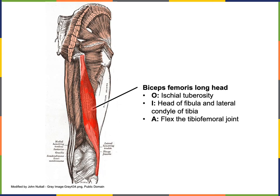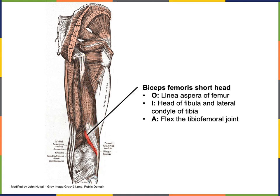Biceps means two heads, and so biceps femoris, like biceps brachii, has two origins. The origin of the long head of biceps femoris is the ischial tuberosity. The short head of biceps femoris originates on the femur at the linea aspera. The insertion of biceps femoris, both the long head and the short head, is onto the head of the fibula and the lateral condyle of the tibia. The action is to flex the tibiofemoral joint.